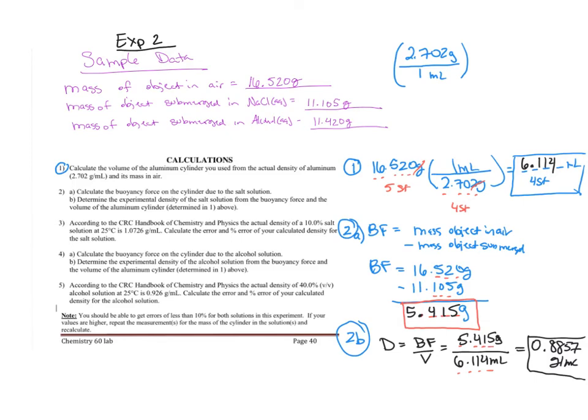Question three: according to the CRC Handbook of Chemistry and Physics, the actual density of a 10% salt solution at 25 degrees Celsius, just room temperature, is 1.0726 grams per milliliter. Calculate the error and percent error of your calculated density. Your true density, or the actual density, is given here. And my calculated density is the one you answered in 2b.